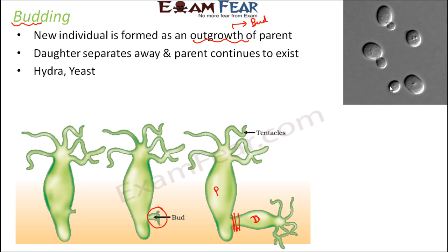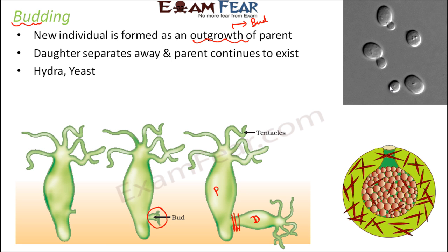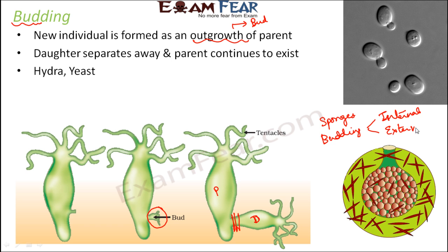Budding also occurs in sponges, the porifera. In sponges, there are two types of budding: internal budding and external budding. External budding is similar to what happens in hydra and yeast — there is an outgrowth on the outside of the body, which is why it is called external budding.